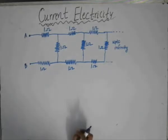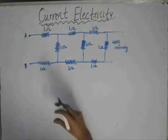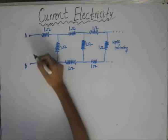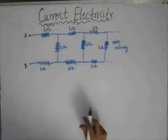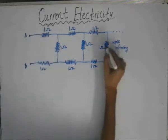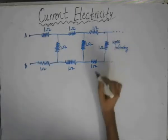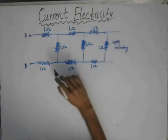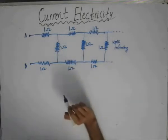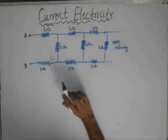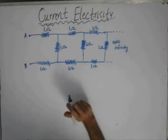In this circuit, we require to obtain the equivalent resistance between the points A and B. This is actually a problem on an infinite ladder of resistors. In this case, the value of each of the resistors is given to us as 1 ohm.